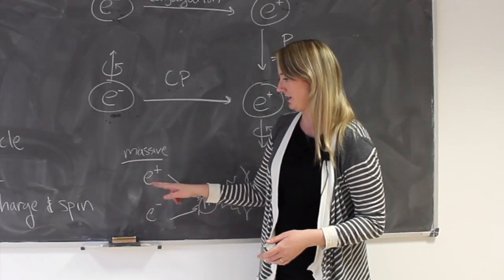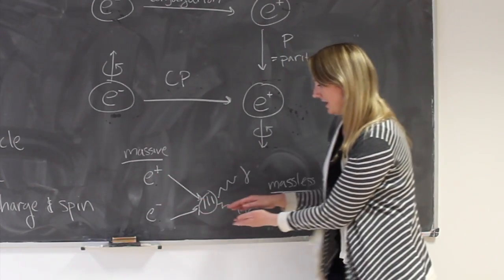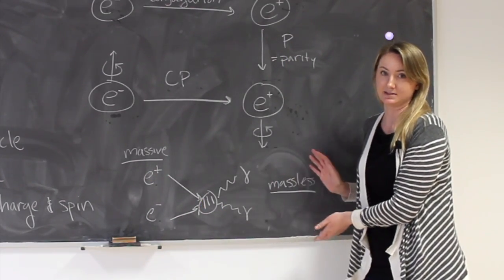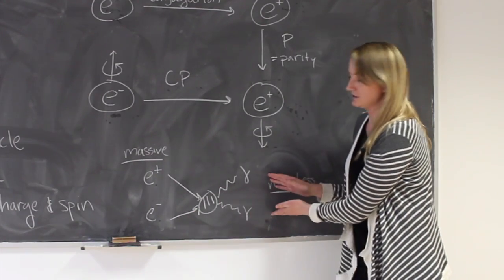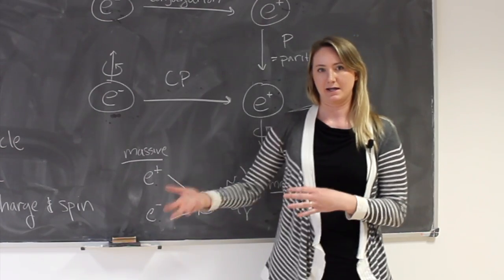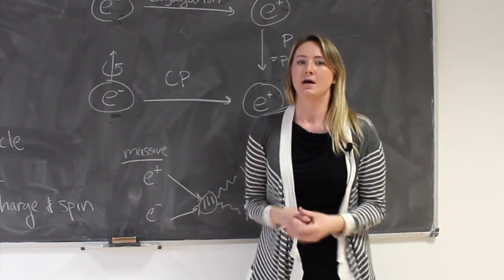One interesting thing about matter and antimatter is that if you have an electron and its antiparticle the positron, they're both massive, but when they interact they annihilate and turn into two photons which are massless. So all of the mass gets turned into energy in the photons.